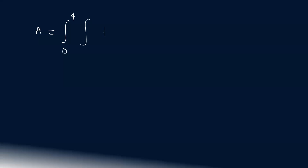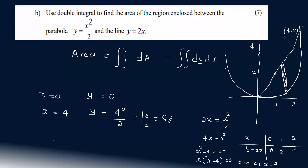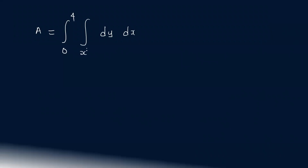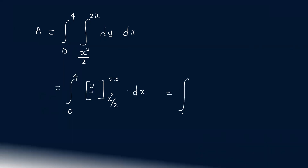The area is equal to the integral from 0 to 4, integrating y dy dx. We find the limits of y: from x squared by 2 (lower) to 2x (upper), then integrate with respect to x from 0 to 4.